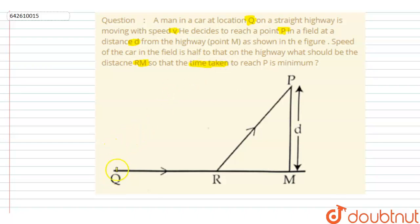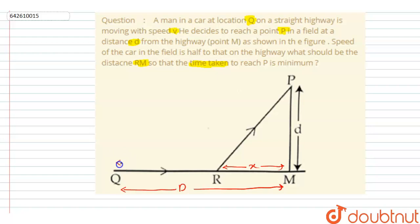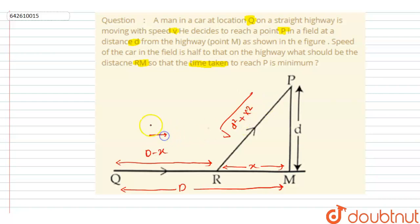We want the minimum time taken by this man to reach from Q to P. Let's suppose this distance is x, and this whole distance is d, so this distance will be d minus x. From Pythagoras, you can also calculate this distance — that will be √(d² + x²). It is given that the speed of the man on the highway path is v and in the field path is v/2.